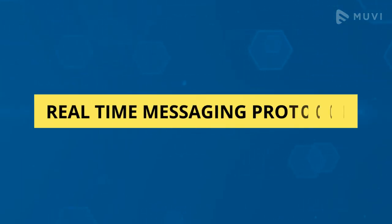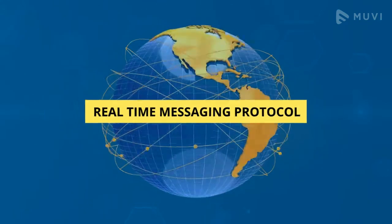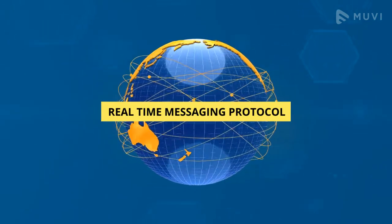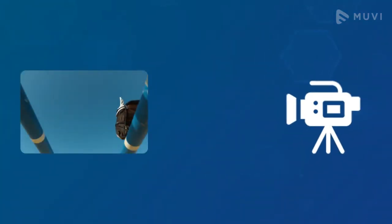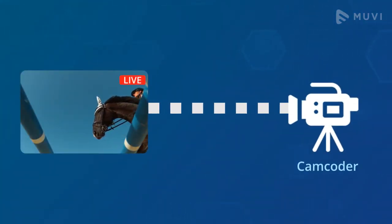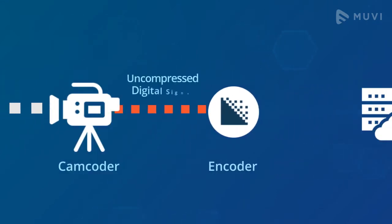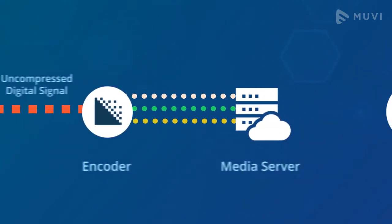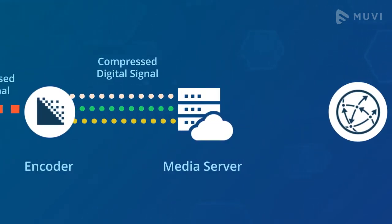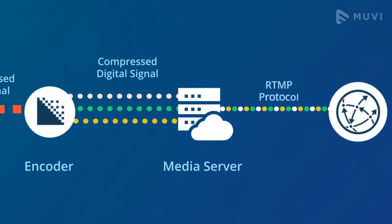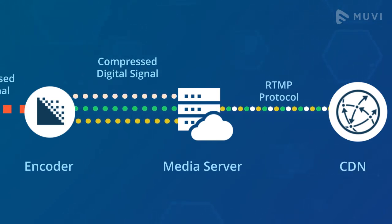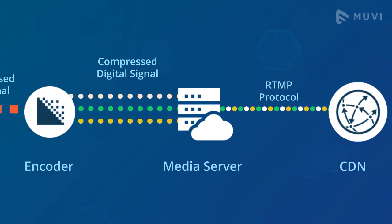RTMP, or real-time messaging protocol, has been the standard for transporting live videos over the internet for more than 20 years. A live video and audio feed is picked up by the camera and goes to an encoder, where it is compressed and pushed into an online video platform or media server. The media server then transcodes the audio and video files into a multitude of formats.